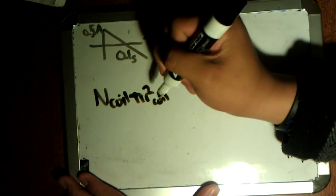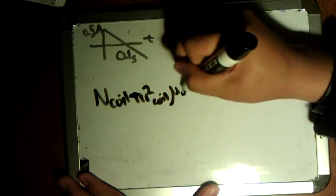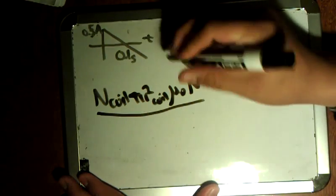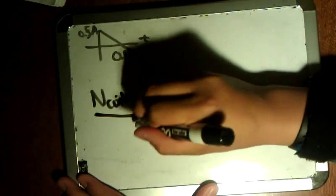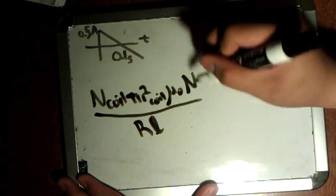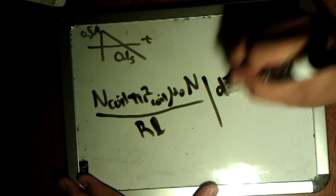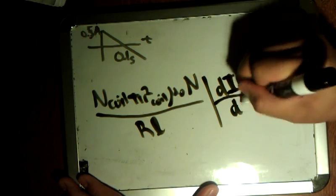So, after all that, we have the N coil times pi r squared of the coil times mu nought, excuse me, mu nought N of solenoid over RL, and we have the absolute value of the change in current over time.